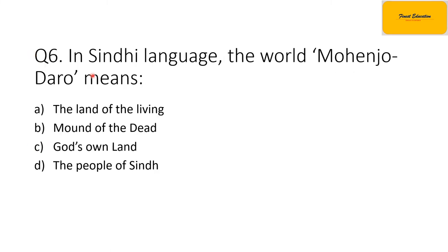Question 6: in Sindhi language, the word Mohenjo-daro means — option A: the land of the living; option B: mount of the land; option C: gods or land; option D: the people of sin. The correct option is option B, meaning mount of the devil.